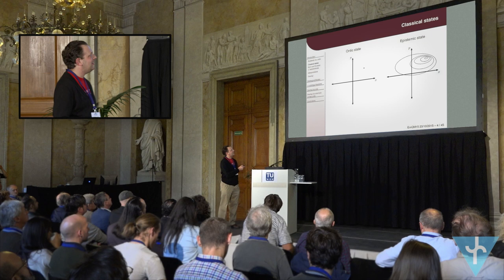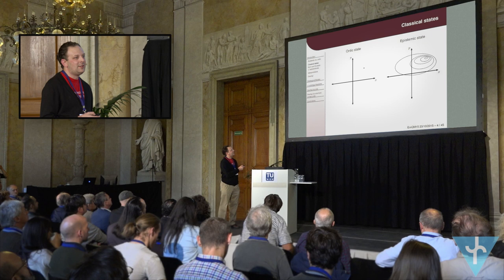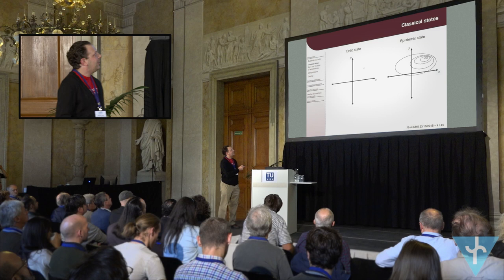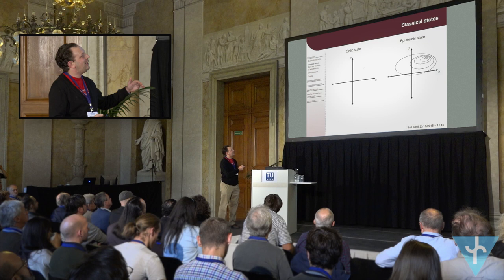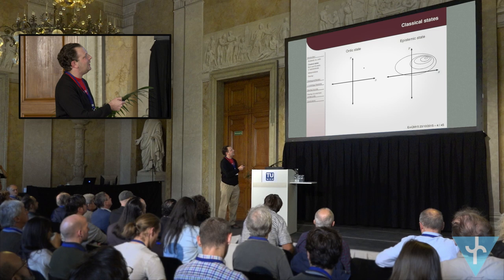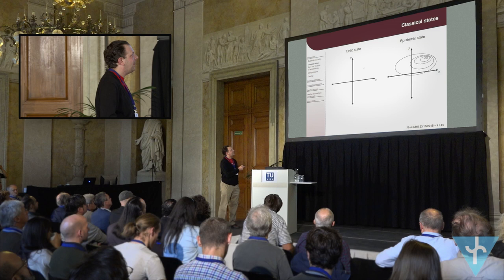Classically, if we consider a Newtonian particle in one dimension, its ontic state is just a point in phase space. If you specify the position and momentum of the particle, all of its objective properties — such as its energy — are just functions of that. An epistemic state is something like a spread-out probability distribution. The idea is that the system really does have a definite phase space point at all times, and this distribution just represents the fact that we're uncertain about where it is.